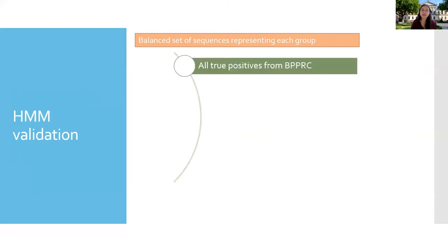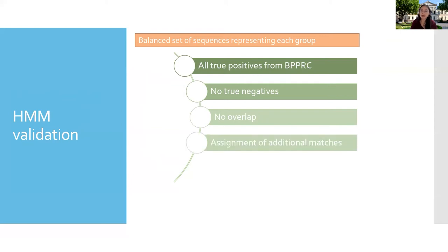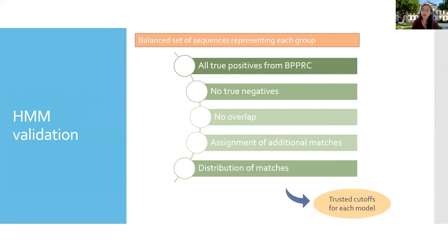At the end, we selected a balanced set of sequences to represent each group with the following validation criteria. A good model must identify all true positives from the official collection, none of the true negatives, there must be no overlap between the sequences matched by the different models, and when scanning the Unipro database, the matches in the highest score range must be consistent with the targeted structural group, and the distribution of those matches should reflect some discrimination between the target class members and the rest of the proteins. This evaluation allows us to define trusted cutoff values for each model, meaning that proteins scoring above certain values could be considered as positive hits.